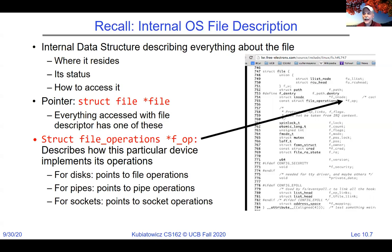The file operations structure — the f_ops item in the file structure — describes how the device implements its operations. For disks, it points to file system operations. For pipes, it points to pipe operations. A pipe is implemented as a queue inside the kernel; the file structure points at that queue and has operations for read, write, etc. For sockets, it points to socket operations. This layer of indirection makes everything look like a file from the user's perspective.